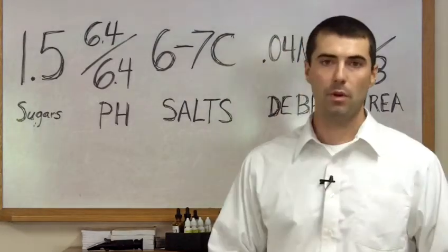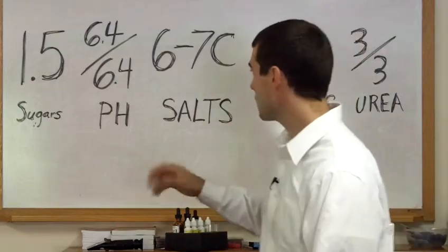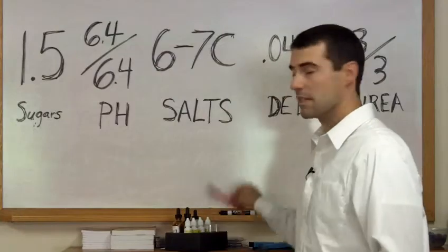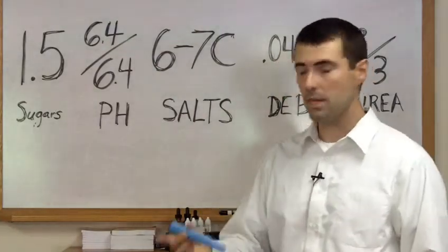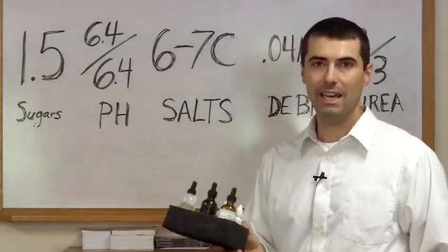There are four pieces of equipment basically necessary to do the test. The first one is a refractometer, second one is a pH meter, third is a conductivity meter, and the fourth is just some basic lab chemicals that you'll get and they come in a kit.